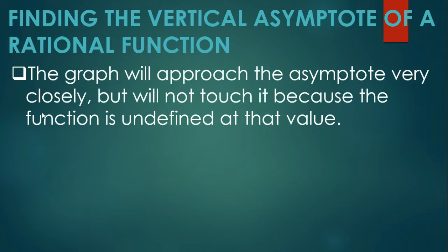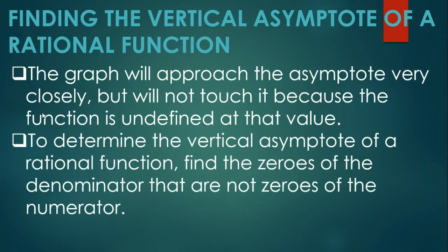To determine the vertical asymptote of a rational function, find the zeros of the denominator that are not zeros of the numerator. In short, ang vertical asymptote ay yung value or values ni denominator — yung values ni x in the denominator that will make it equal to zero. Value or values kasi, possible na hindi lang isa yung vertical asymptote.